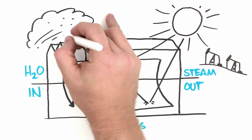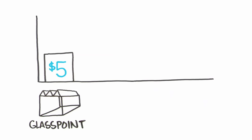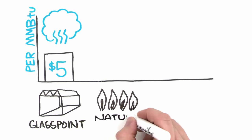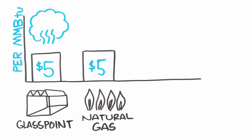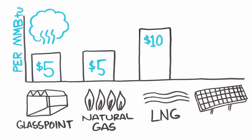The glasshouse protects the mirrors from the sand and dust common in oil-producing regions. By using commodity components like agricultural greenhouses, the cost of the steam produced is competitive with the cost of gas in many regions of the world, and is much lower than the cost of alternatives such as LNG or older solar designs.